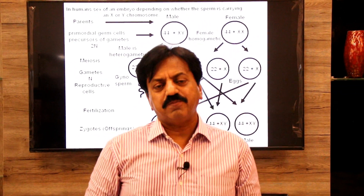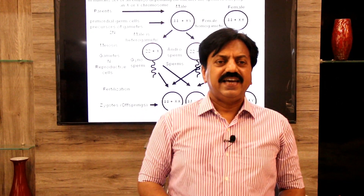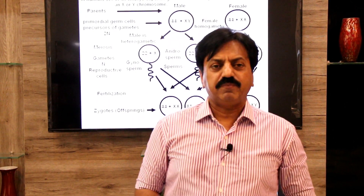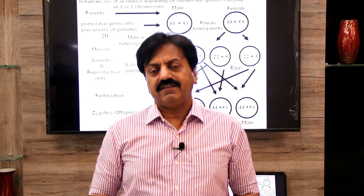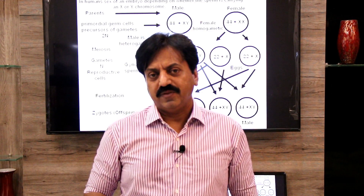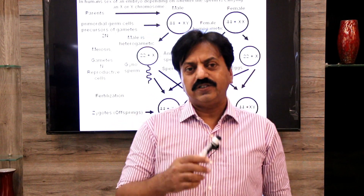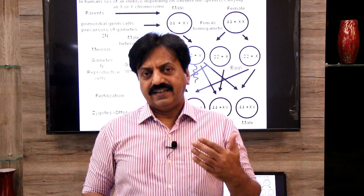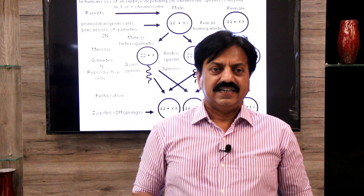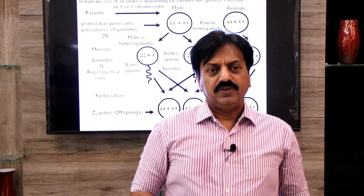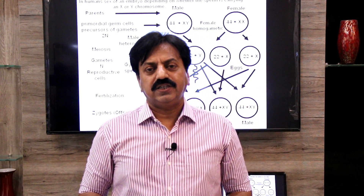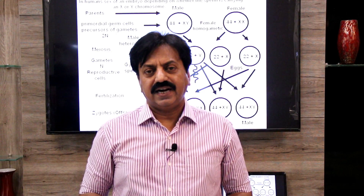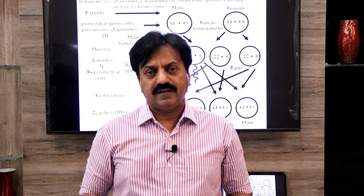On the Y chromosome there is a gene called SRY gene — the sex-determining region on the Y chromosome — which determines male sex. It codes for testes and is also called the testes-determining factor. This is the whole mechanism of sex determination in human beings, which is the XX and XY type.